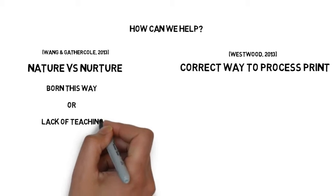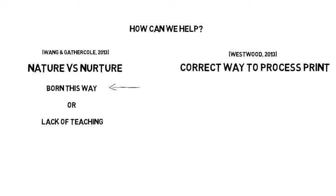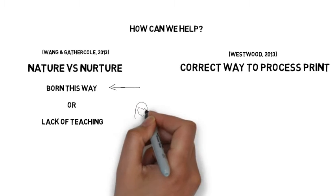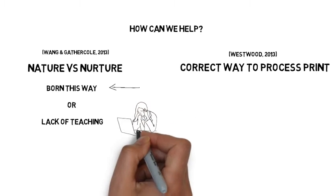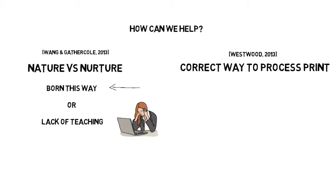Studies show there is a link between reading difficulties and working memory. Students with low reading abilities have substantial deficits in complex span tasks. These difficulties affect up to 6% of the school population and have shown to affect the students throughout their schooling careers.